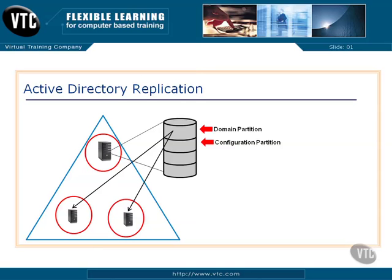The next one is the configuration partition. This has all the objects that represent the logical structure of the forest — it keeps track of the number of domains, the physical topology, all the sites, subnets, and services. This is what keeps up with how many domains we've got, who's in them, and so forth. That partition gets replicated to all the other servers in the domain.